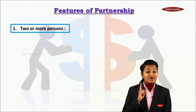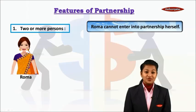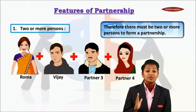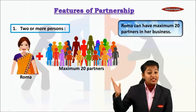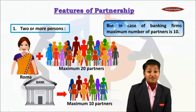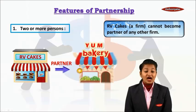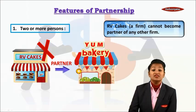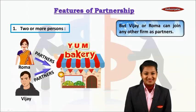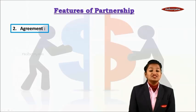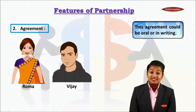The first feature of partnership is two or more persons. Roma cannot enter into partnership herself; there must be two or more people to form a partnership firm. Roma can have a maximum of 20 partners, but if it is a banking firm, the maximum number of partners is 10. A firm like RV Cakes cannot become a partner of another firm such as Yum Bakery, but Vijay or Roma individually can join Yum Bakery as partners. The second feature is agreement — partnership is an agreement between Roma and Vijay, which could be oral or in writing.